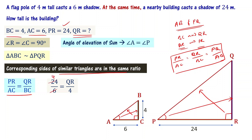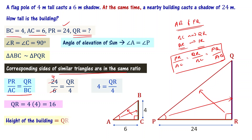Solving: 4 equals QR by 4, therefore QR equals 16. The height of the building is 16 meters.